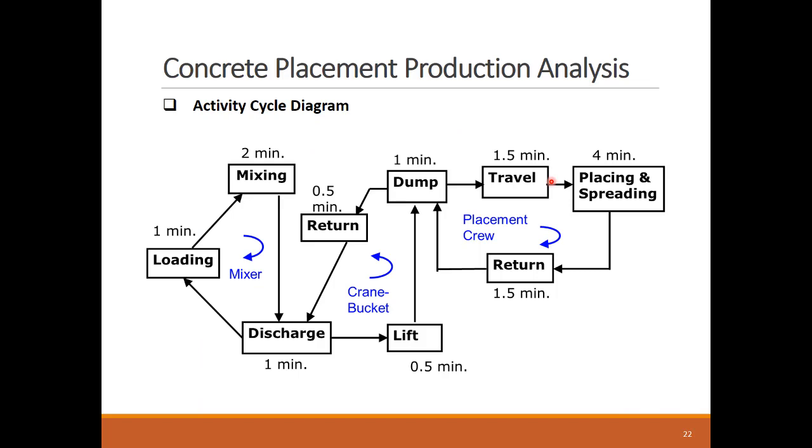We can visualize operation steps using an activity cycle diagram where we can clearly see the cycles of each individual resource. For example, the mixer performs its cycle of mixing, discharge, and loading. We can see these cycles intersect in two spots. The crane and mixer are both needed in the discharge step where the batch is handed from the mixer to the crane bucket. Also, the crane and the placement crew both perform the dump task.